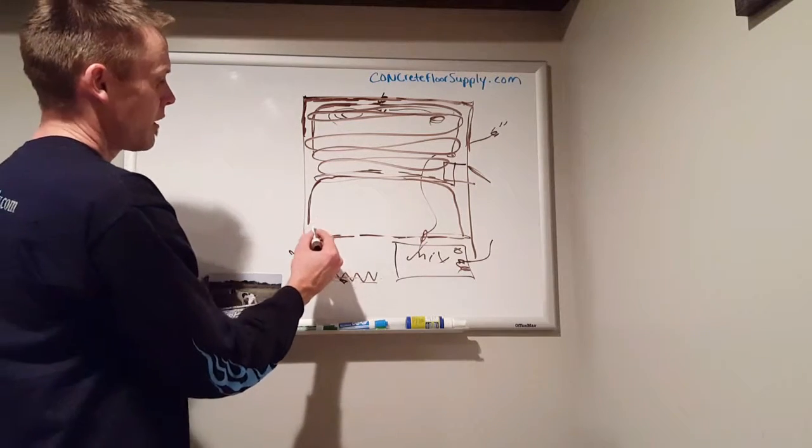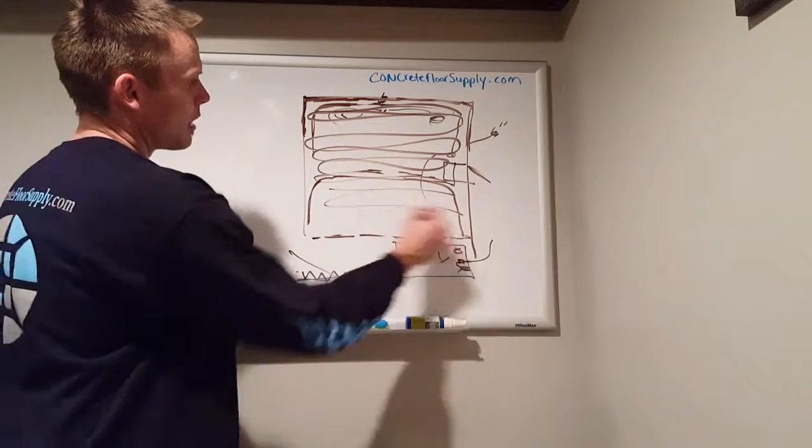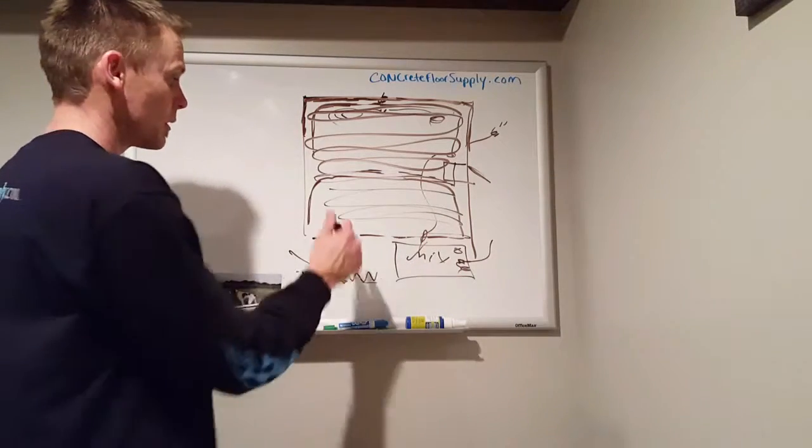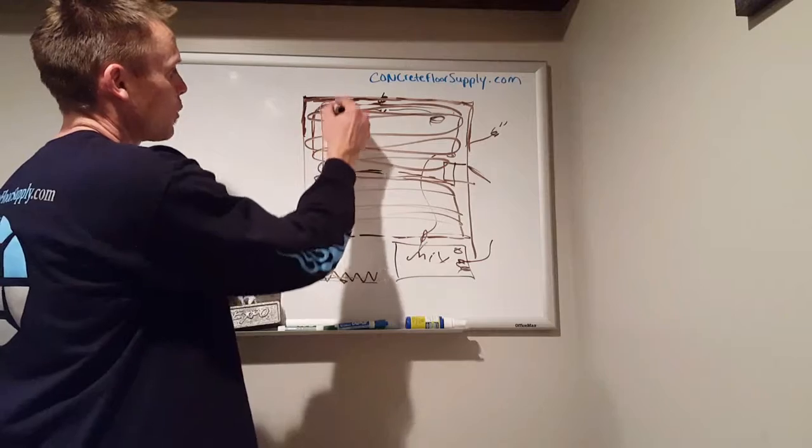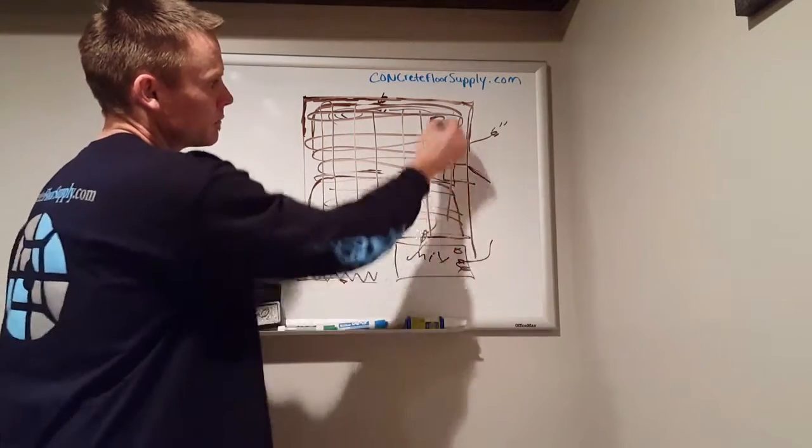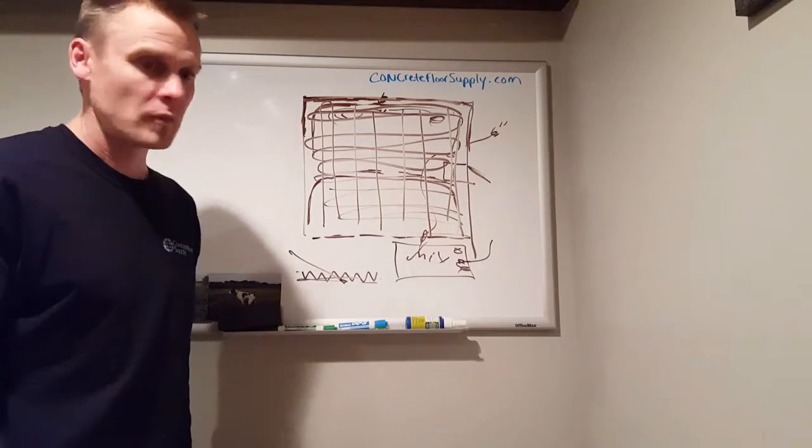So then after that's done and the epoxy spread throughout the entire floor, you'll find that it just levels out on the floor, but you'll want to go back through and walk through it with your spike shoes and do some up and backs with a roller and lay it out.